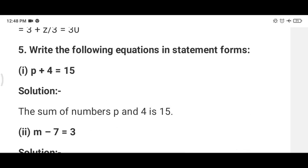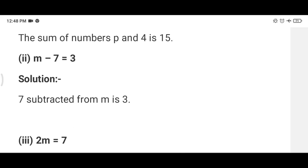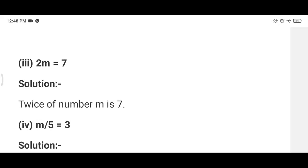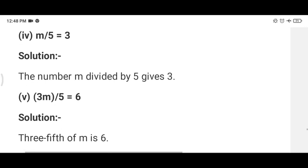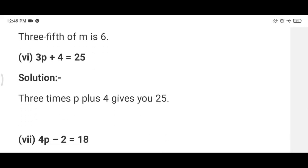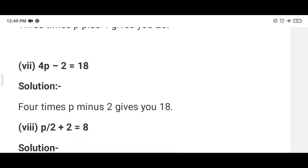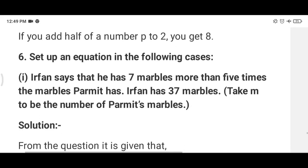Now in this equation you have to write a statement. We will write equation to statement. p plus 4 equals 15, we can write the sum of p and 4 is 15. m minus 7 equals 3, we can write 7 subtracted from m is 3. 2m equals 7, twice of number m is 7. m upon 5 equals 3, m divided by 5 gives 3. 3m upon 5 equals 6, 3 fifth of m is 6. 3p plus 4 equals 25, 3 times p plus 4 gives you 25. 4p minus 2 equals 18, 4 times p minus 2 gives you 18. p upon 2 plus 2 equals 8, half of number p added to 2 equals 8.